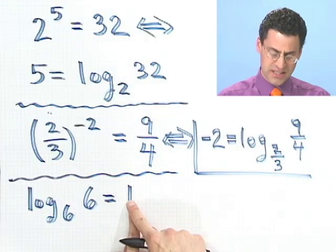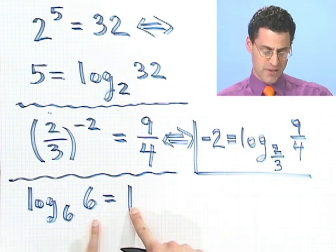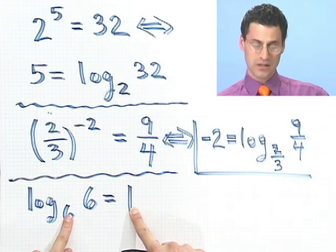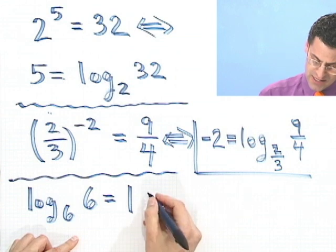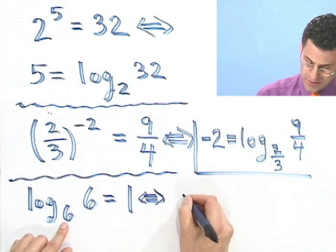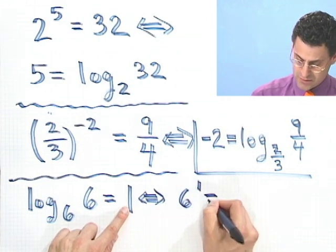Okay, well let's see. A log is the exponent. So 1 is the exponent that I have to raise the base 6 to in order to get 6. So this is identical to 6 to the first equals 6.